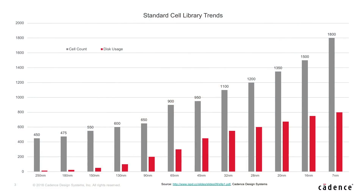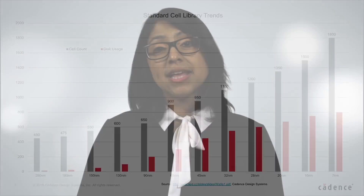Every new node challenges designers due to the enormous number of corners that need to be characterized. Besides corners, there are libraries of different threshold voltages, tracks and channel lengths that need to be generated, and then there is a need to model different data types like timing, power, and noise.